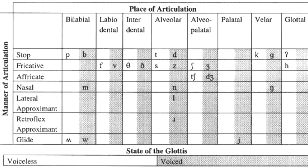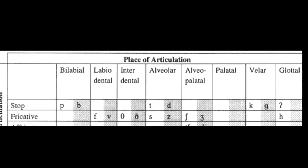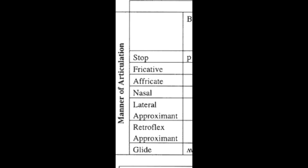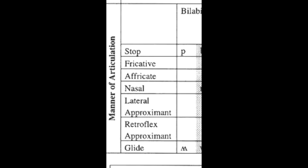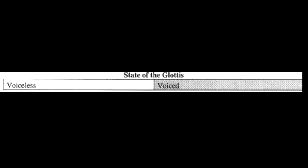Looking at the chart overall, you can see the horizontal line along the top is the place of articulation, and the vertical section is the manner of articulation — how the sound is made. The white and gray represents voiceless and voiced sounds respectively.